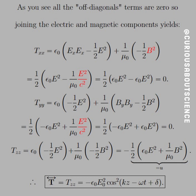Joining the electric and magnetic components, the entry for T_xx simplifies quickly because E_xx is equal to the full E field in this case. So we have E squared minus one-half E squared, which goes to positive one-half. Then B squared equals E squared over c squared by definition, so we have everything in terms of E squared. Putting in the definition of c squared — which introduces epsilon_0 and mu_0 — the mu_0's cancel and we're left with epsilon_0 E squared. So one-half epsilon_0 E squared minus epsilon_0 E squared goes to 0. Similarly, for T_yy, doing the same substitution gives a zero term as well.